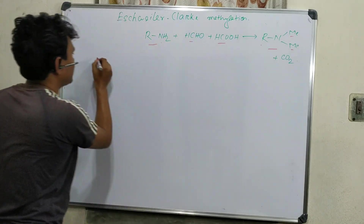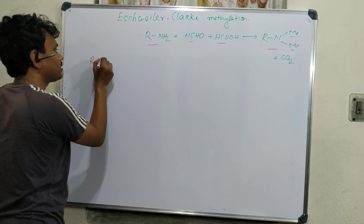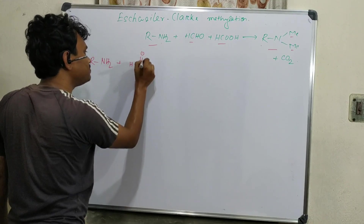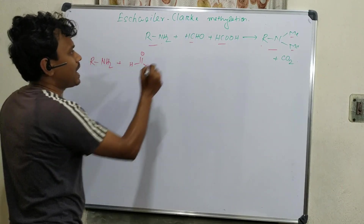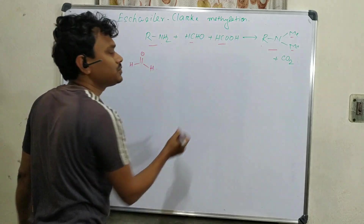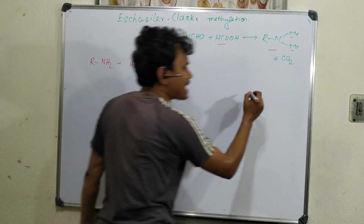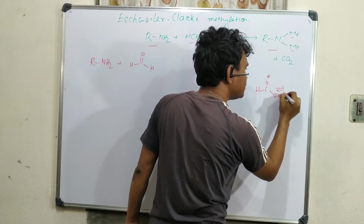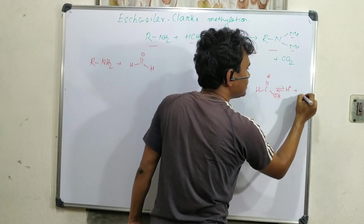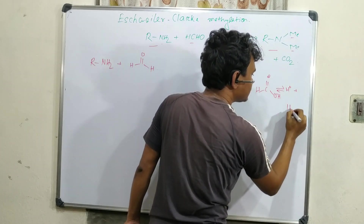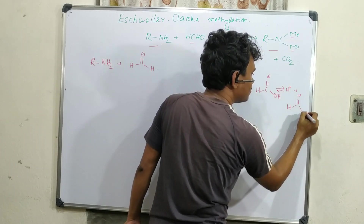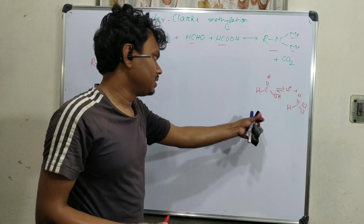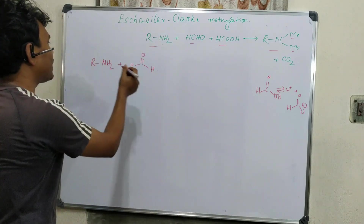We have an amine and an aldehyde. We know that when an amine plus an aldehyde react, they produce an imine via the elimination of water. Here, formic acid acts as an acid — you can consider it like acetic acid, which produces H⁺ plus formate⁻. Formic acid is actually stronger than acetic acid.